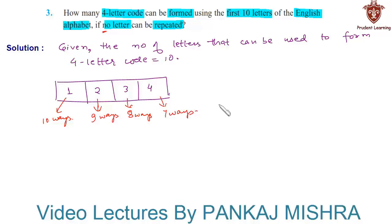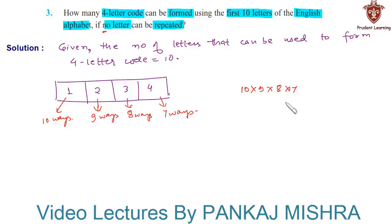So by the fundamental principle of counting, the total number of ways in which a 4-letter code can be formed using the first 10 letters of the English alphabet is 10 × 9 × 8 × 7, that is 5040. Hence the number of 4-letter codes that can be formed when no letter can be repeated is 5040.